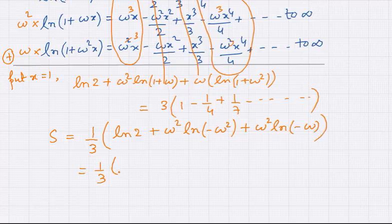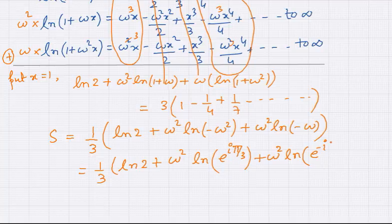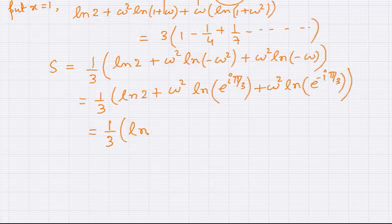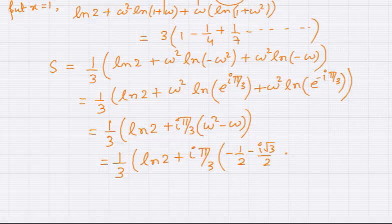Now we use complex numbers to simplify. We write -ω² = e^(iπ/3) and -ω = e^(-iπ/3) in Euler form. On simplification this comes out to be (1/3)[ln 2 + (iπ/3)(ω² - ω)], where we can substitute the values of ω² and ω.